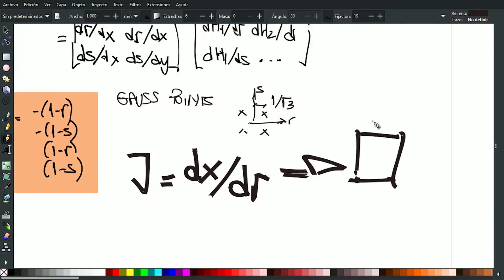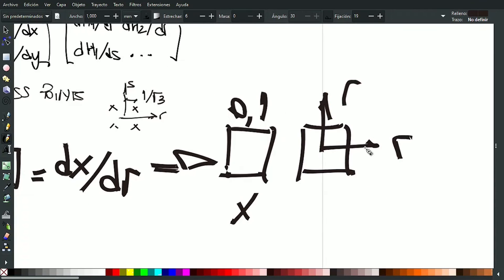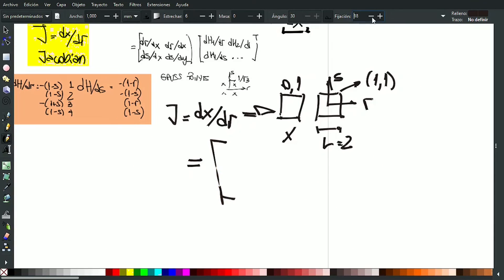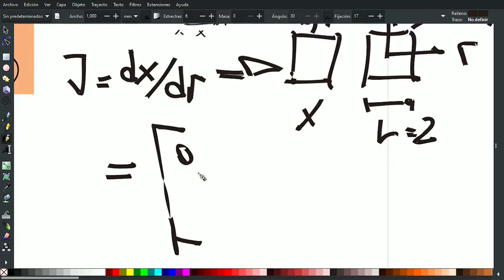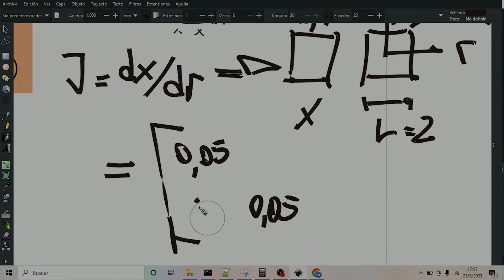On the other hand, the Jacobian inverse, the derivative of intrinsic coordinates respect to xi global coordinates, should be calculated on each Gauss point. In this simple case, which is a square element, Jacobian and its inverse should be constant and independent of each integration point. For an element length of 0.1, for example, Jacobian should be equal to 0.05 units.